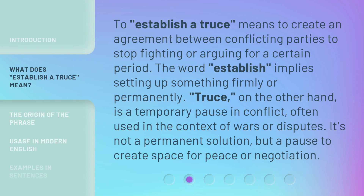To establish a truce means to create an agreement between conflicting parties to stop fighting or arguing for a certain period. The word establish implies setting up something firmly or permanently. Truce, on the other hand, is a temporary pause in conflict, often used in the context of wars or disputes. It's not a permanent solution, but a pause to create space for peace or negotiation.